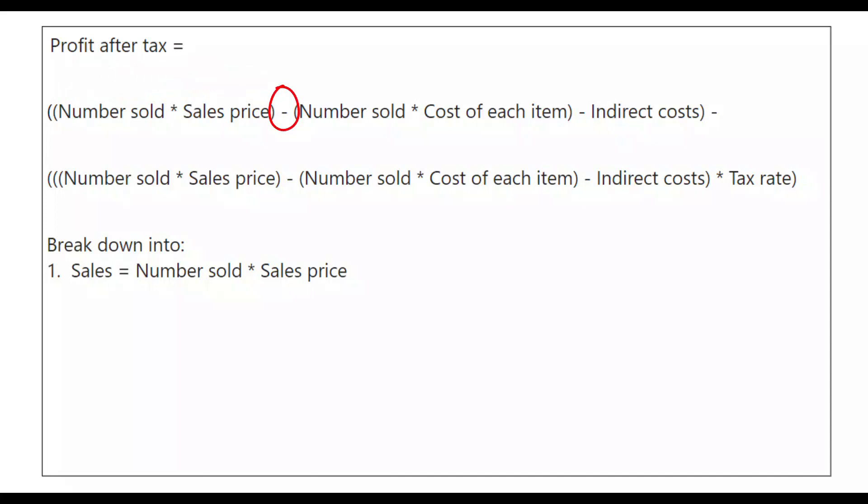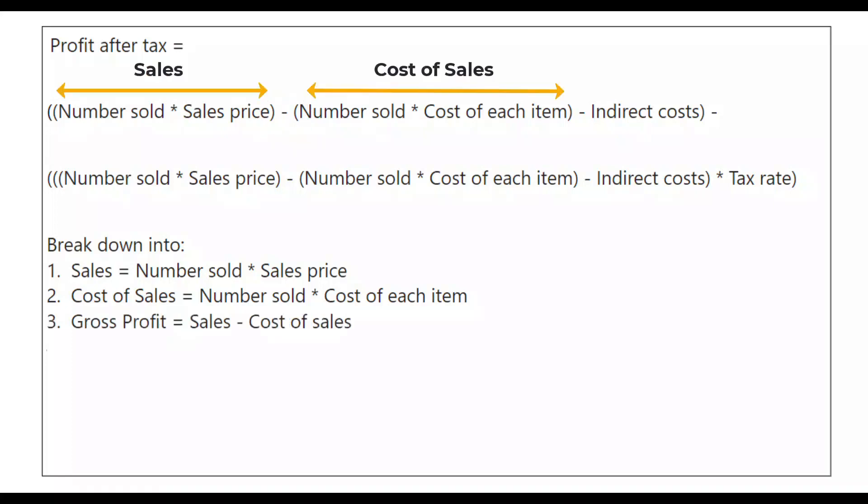I will return to the minus sign in a moment. But next, I will look at the second set of nested brackets. The number sold multiplied by the costs associated with selling that specific product. So, I will call that cost of sales. Cost of sales equals the number sold times the cost of each item. I have dealt with the two sets of nested brackets. So, now I consider the minus sign.